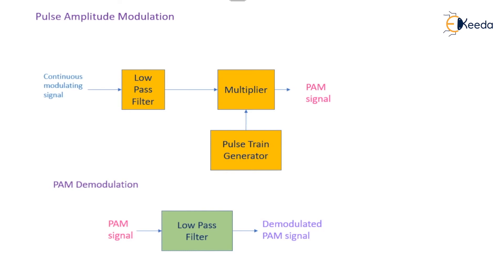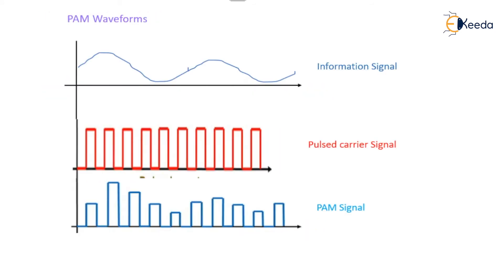Finally, we will get the PAM signal. The detection of the PAM signal is very simple — the PAM signal is just applied to the low pass filter, and after low pass filtering we can get the demodulated PAM signal.